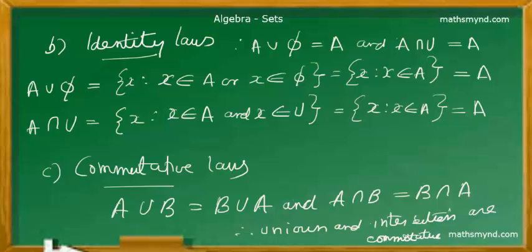And A intersection U, the intersection of a given set with the universal set, gives that set. Because the universal set contains all the elements, including the elements of A. If you separate it out, the commonality of the elements is that we can choose only the elements which are present in A, and not any other elements.